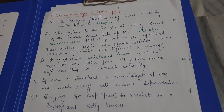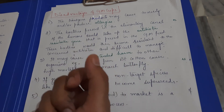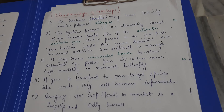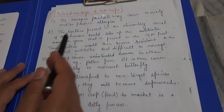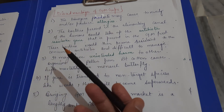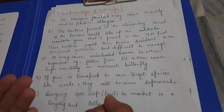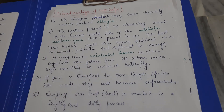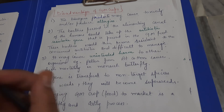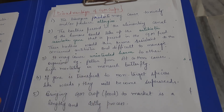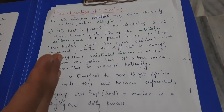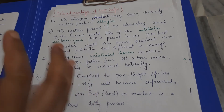The disadvantages of GM crops include the following: products of GM crops can cause allergies in some people. Bacteria present in the elementary canal may acquire antibiotic resistant genes from GM crops. When we eat GM crops that contain antibiotic resistance marker genes, those genes can transfer to gut bacteria, making antibiotic treatment less effective.